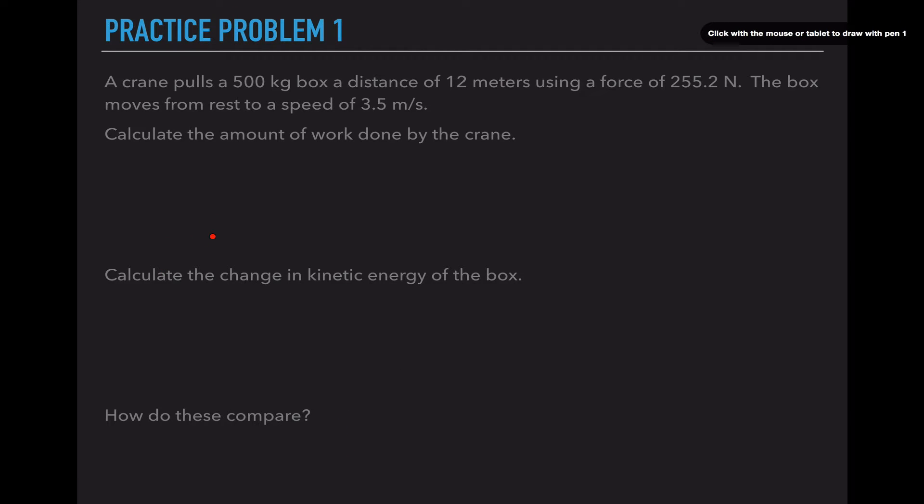Here's our first practice problem. A crane pulls a 500 kilogram box a distance of 12 meters using a force of 255.2 newtons. The box moves from rest to a speed of 3.5 meters per second. Calculate the work done by the crane. Work equals force parallel times distance. They tell me the force is 255.2 newtons and the distance is 12 meters. So work is 255.2 times 12, which gives us 3062.4 joules.